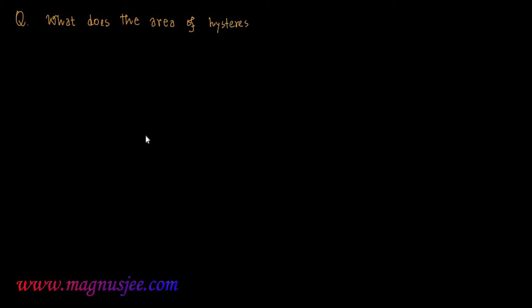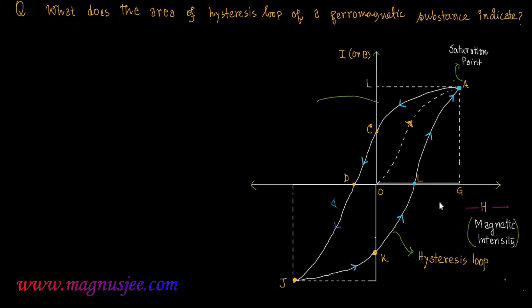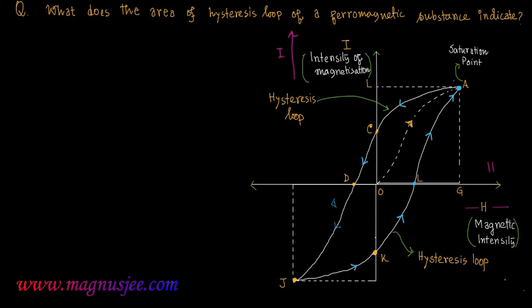What does the area of the hysteresis loop of a ferromagnetic substance indicate? In the diagram, this is the hysteresis loop in which intensity of magnetization (I) of a ferromagnetic substance is plotted along the vertical axis and magnetic intensity (H) is plotted along the horizontal axis.